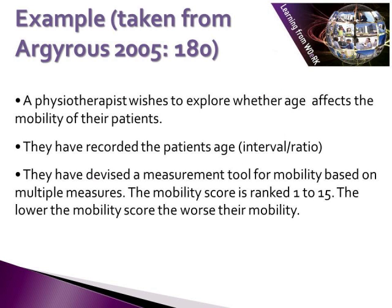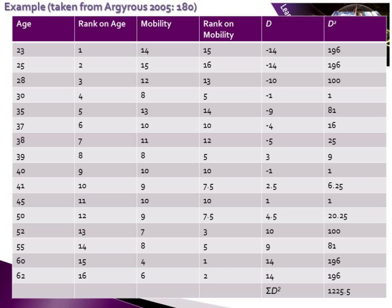As an example, a physiotherapist wishes to explore whether age affects the mobility of their patients. They have recorded their patients' age as interval or ratio data — so it is a number. They then devised a measurement tool for mobility based on multiple measures; the mobility score is ranked 1 to 15, and the lower the mobility score, the worse the mobility. The data was generated from 16 people of different ages.